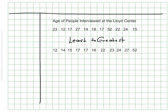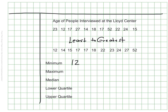Now that I have my numbers in order, I can make a list of the five numbers in my five-number summary. The minimum — the lowest number — is 12, the youngest person on the list. The maximum is 52; there was no one older than 52 in the set. The median is in the middle — work your way in to the center, and you should find that the middle number is 18. That means half of the people are 18 or older and half were 18 or younger.